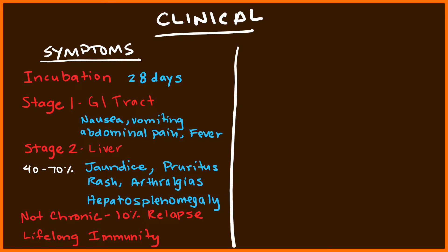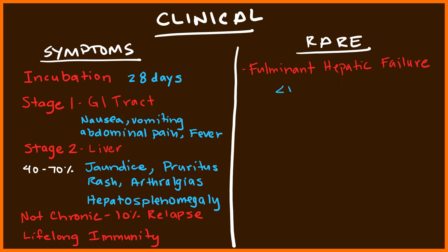Just because it's not chronic doesn't mean it's completely benign — there are many rare complications to be aware of. First and foremost, the biggest concern is fulminant hepatic failure, which occurs in less than 1% of patients, but when it does, it is associated with a very high mortality. In particular, individuals at risk are those with age greater than 50 years old or underlying liver disease.